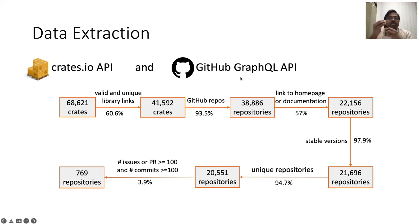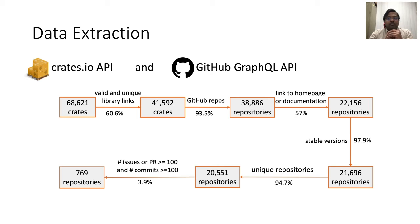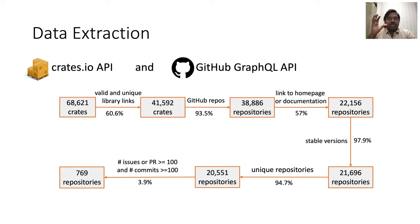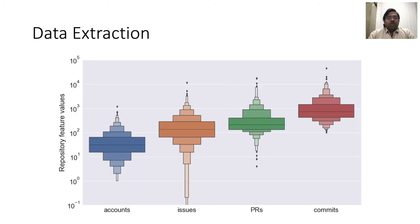After this, we used GitHub's GraphQL API to analyze the number of issues, pull requests, and commits present in all 20,000 repositories. Since bigger projects are more likely to use bots, I defined big projects as having at least 100 issues, 100 pull requests, and 100 commits. Filtering on this basis, I obtained around 769 repositories — just one percent of the main Cargo packages — which is a curated set believed to have bots involved.